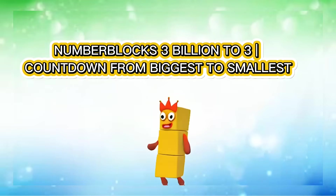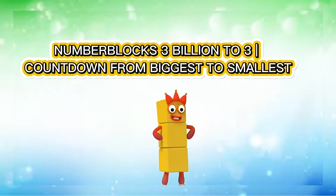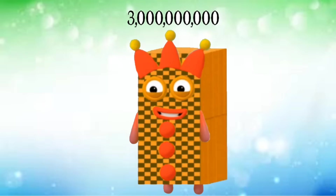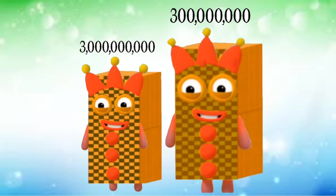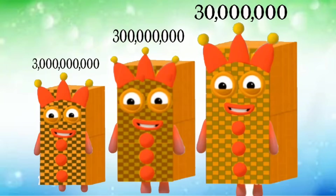Number blocks 3 billion to 3, countdown from biggest to smallest. 3,000,000. 300,000,000. 30,000,000.